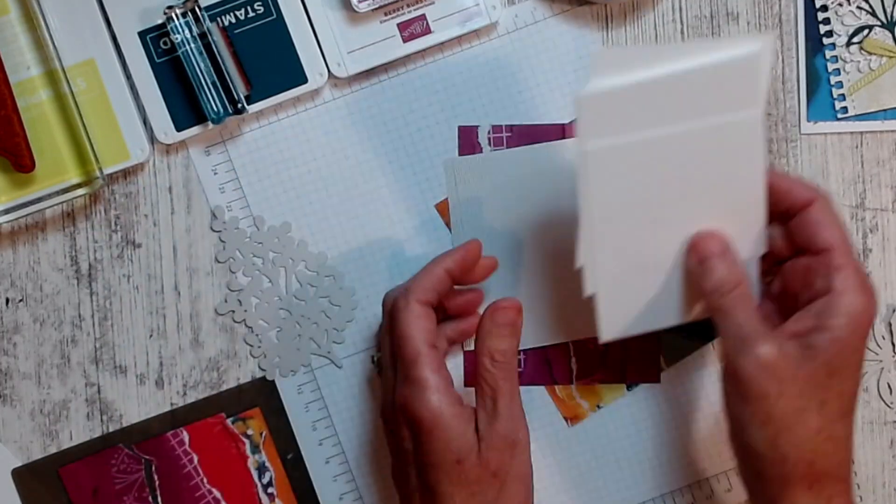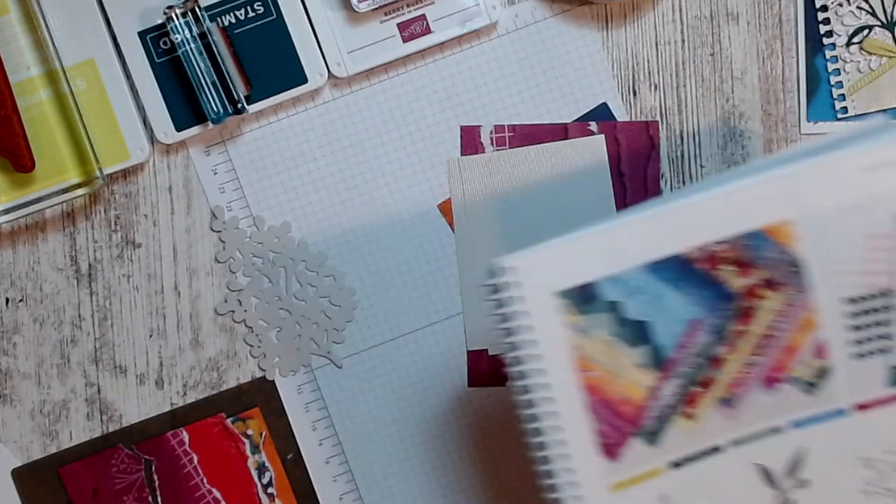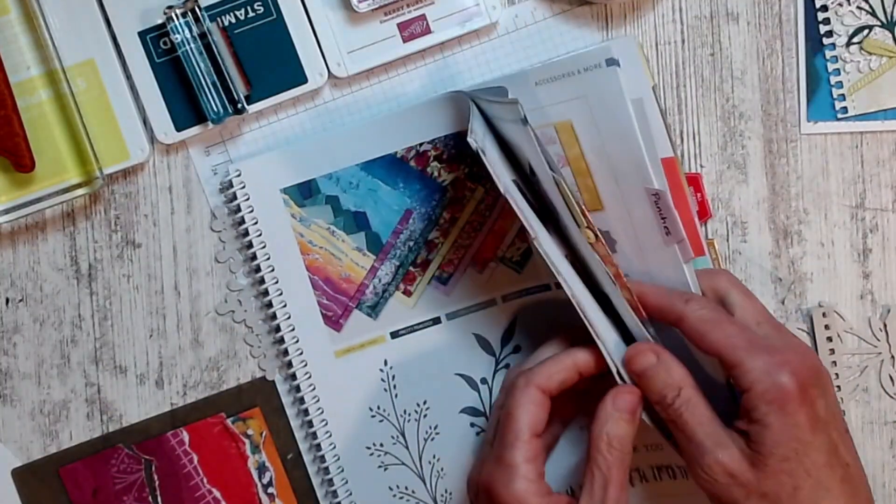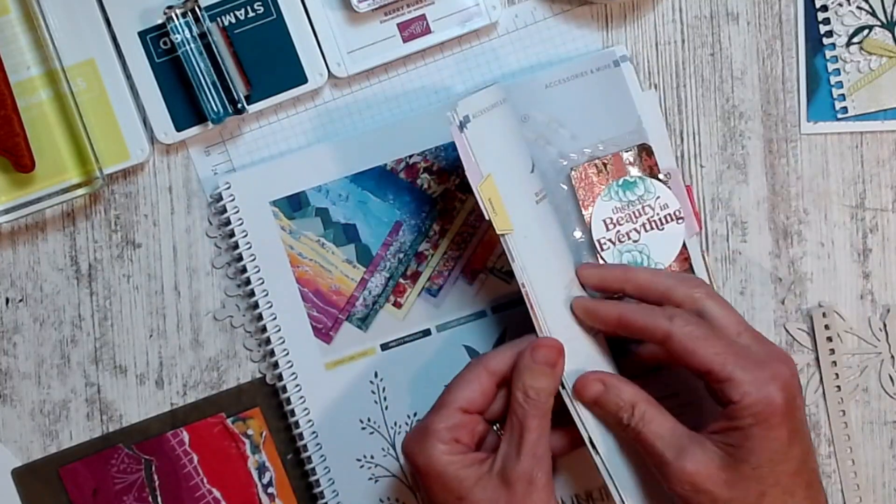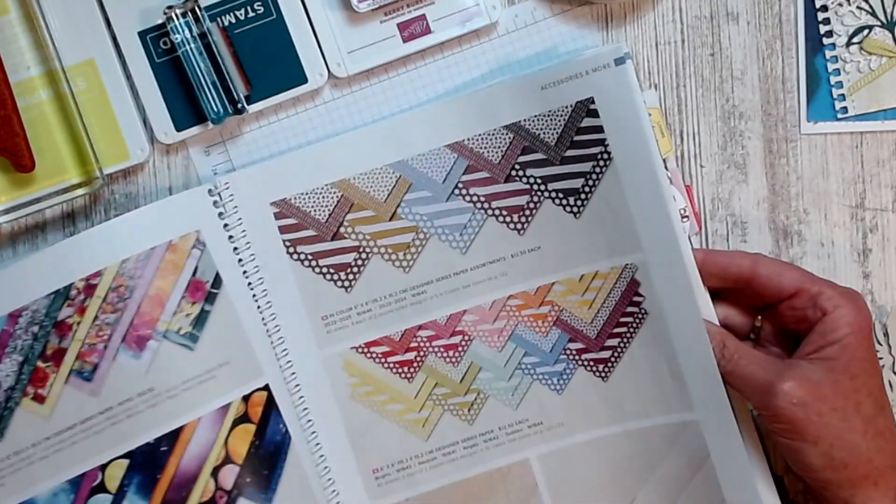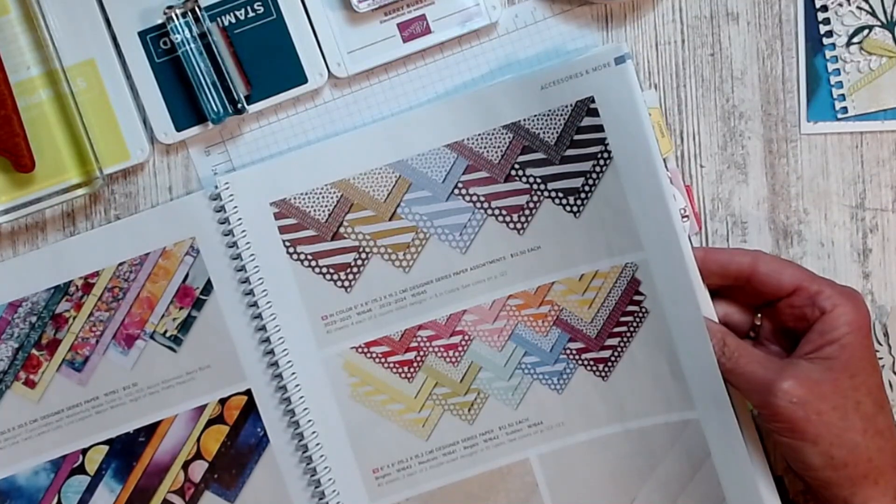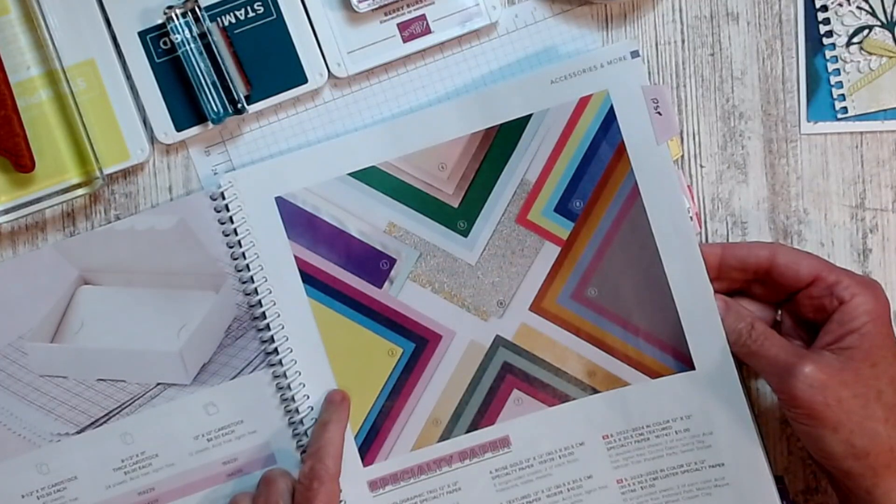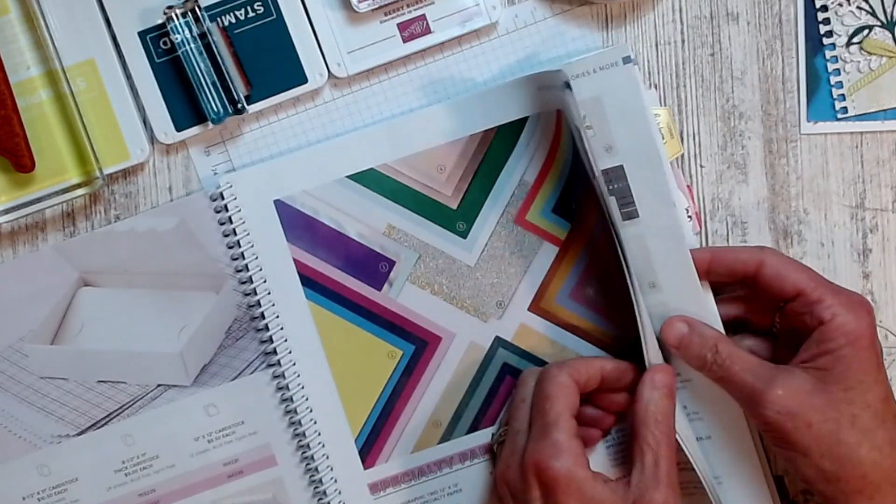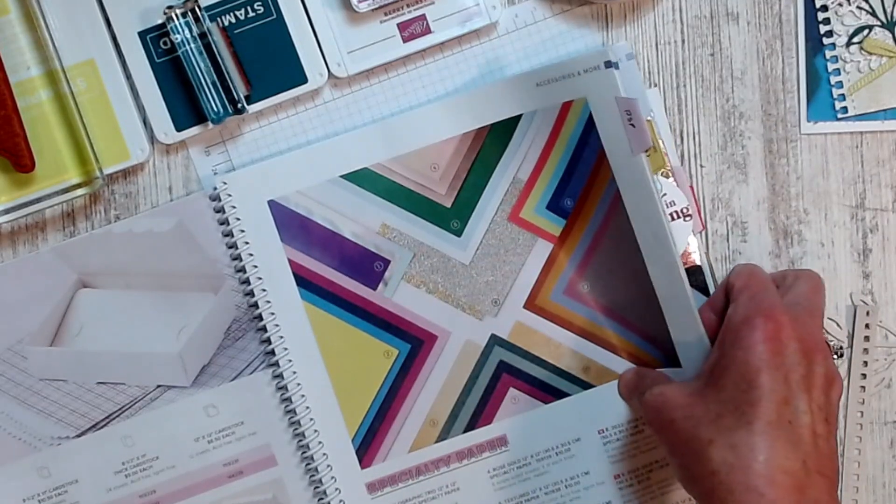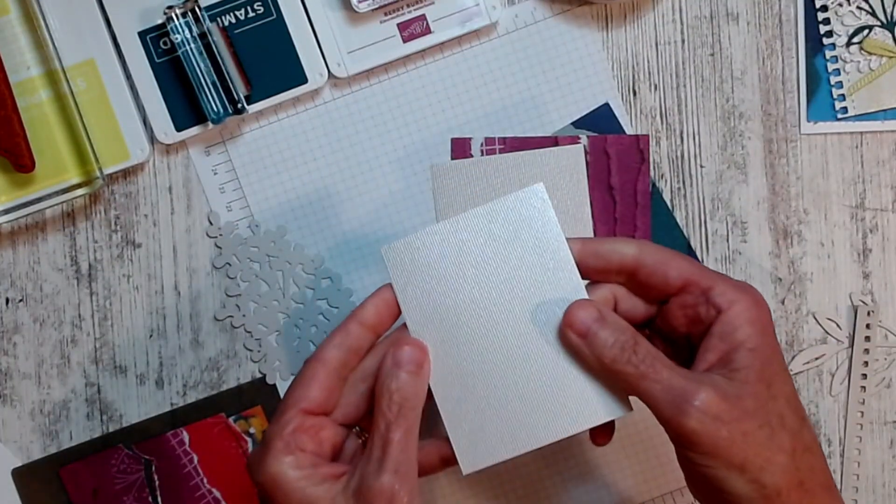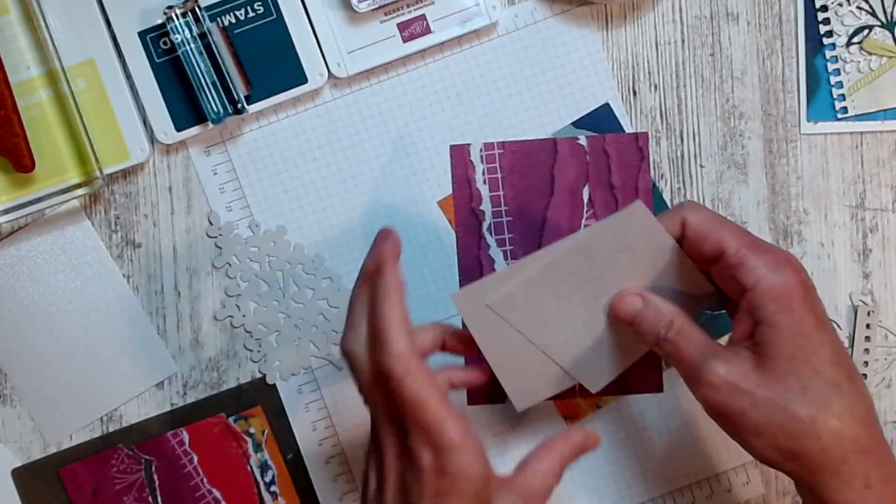So I used this designer series paper and I'm going to go back here to my favorite page in the catalog. Here's the masterfully made paper. But this is my favorite page. It's the party page. It's got all the pretty papers. So the textured shimmer that comes in shaded spruce balmy blue and white is what I used on the front of this card. So that's what this paper is. And then the masterfully made paper.